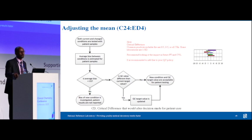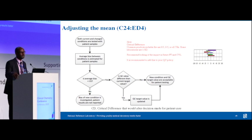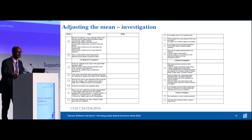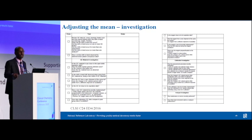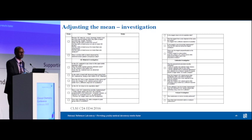Adjusting the mean is one of the most common questions we receive in the QA and technical department. People ask: we have a new reagent and the mean shifted — can we shift the QC mean as well? Or we recalibrated and the mean shifted. Historically we had no guidance on when to adjust the mean. Now CLSI provides a scientifically proven approach for when we can adjust the mean, and the CLSI document has a table with investigation techniques to help decide. I recommend adding this table to your troubleshooting section.